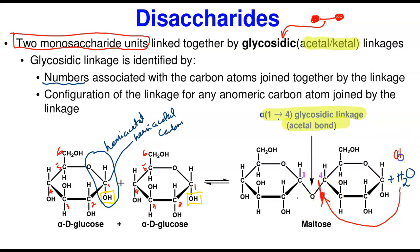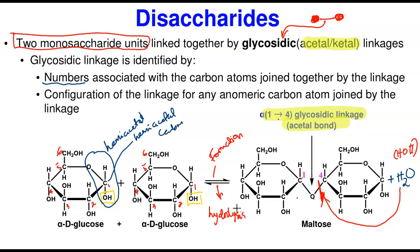What do they form? They form two alpha-D-glucose molecules. So the forward reaction here is the formation of the disaccharide, whereas the reverse reaction is the hydrolysis. It's important you know this — in an exam I can ask you to draw the hydrolysis of a disaccharide or the formation of a disaccharide from two given monosaccharide units.